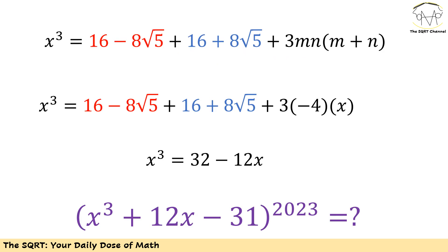Now we have mn as minus 4, we have m plus n as x, and we have everything else as is. On the left hand side we have x cubed. On the right hand side we have 16 minus 8 times square root of 5, we have 16 plus 8 times square root of 5, and we have 3 times negative 4 times x.